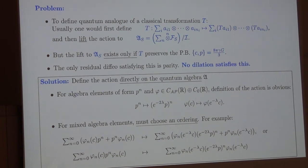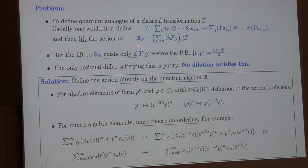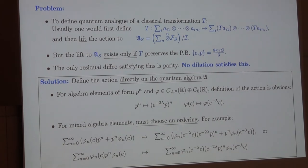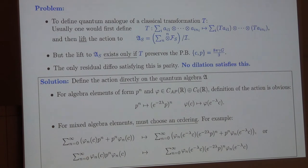If I want to find the action of a transformation on my quantum algebra, normally I would start with a transformation on my phase space which preserves my classical Poisson algebra of observables, and then it's obvious how to make it act on the direct sum of tensor products. But you need to lift it to the quotient space, and you can only do that if it preserves the ideal — in particular, only if it preserves the Poisson brackets. Dilations do not preserve the Poisson brackets: the left-hand side changes by e to the minus three lambda and the right-hand side does not change at all. So the only residual diffeomorphism that lifts to the quantum algebra in this simple way is parity, which is not enough to get uniqueness.